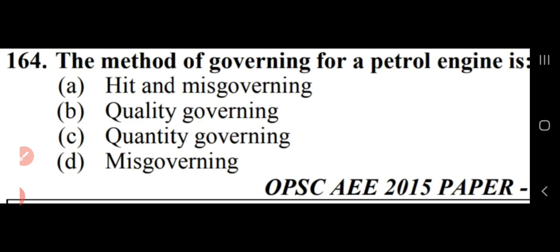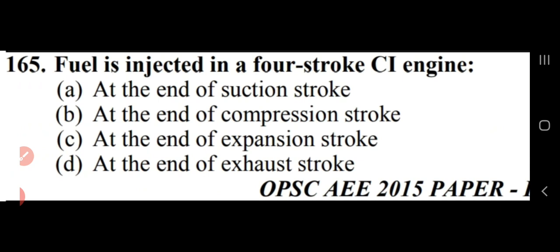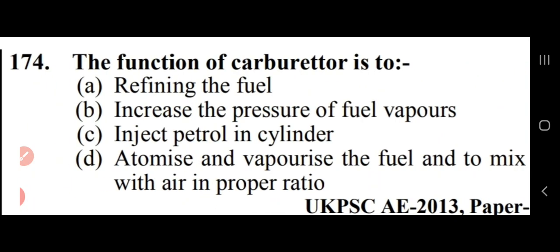Fuel is injected in a four-stroke CI engine at the end of the compression stroke — option B. The function of the carburetor is to atomize and vaporize the fuel and mix it with air in the proper ratio — option D.